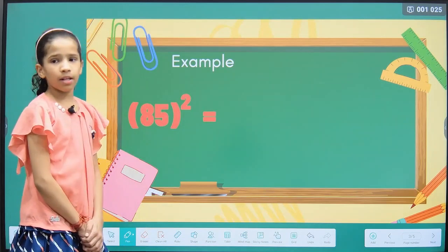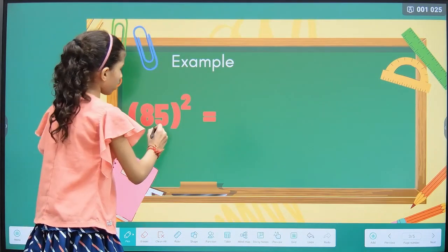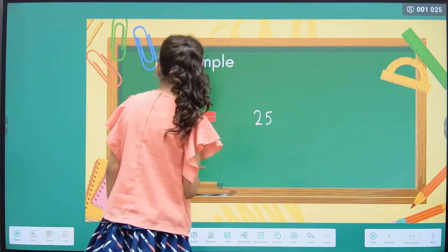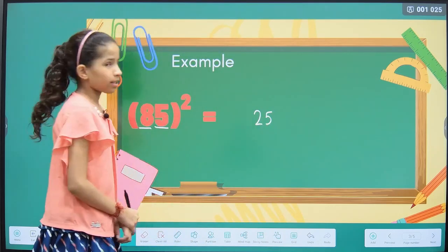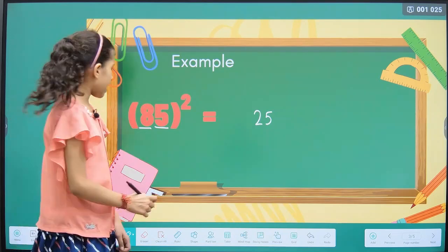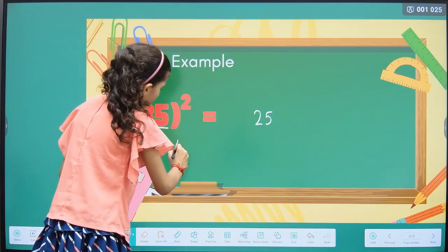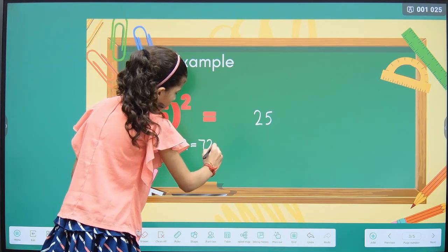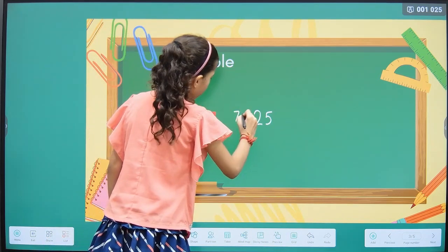The second example is 85. The square of 5 is 25. The rest value is 8. The successive number of 8 is 9. Then we multiply 8 into 9, which equals 72. The answer is 7225.